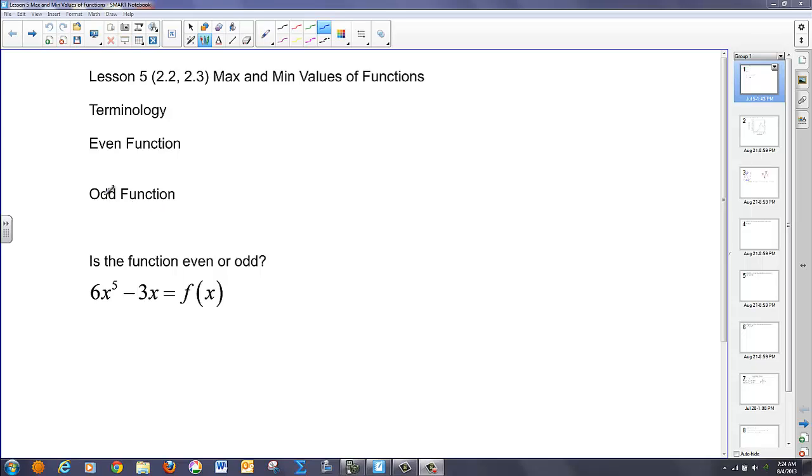We talk about even and odd functions. All this is, is dealing with different types of symmetry. So an even function is y-axis symmetry, and an odd function is origin symmetry. And if we're asked to find if a function is even or odd, we just test for the two of those.